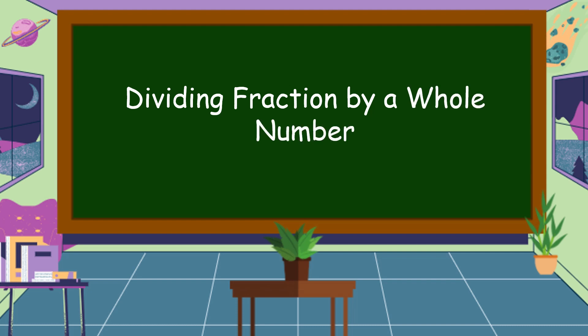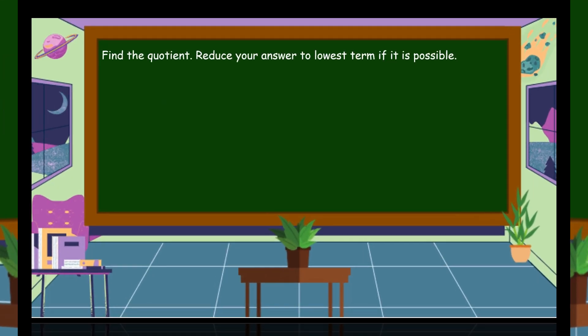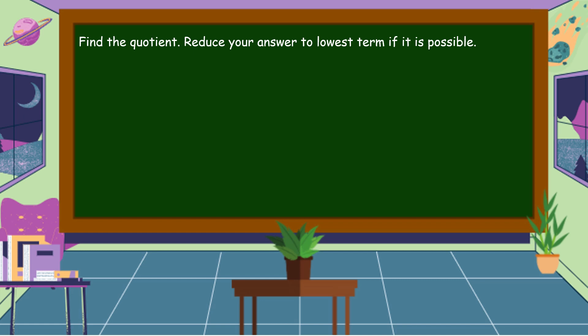Ang susunod nating pag-aralan ay dividing fraction by a whole number. Find the quotient. Reduce your answer to lowest term if it is possible. Two-sevenths divided by nine. So, dito ang ating divisor ay whole number. Ganun pa rin yung process natin — lalagyan natin ng denominator na one ang ating whole number, tapos gagamitan natin ng cross multiplication. So, two times one is equal to two. Seven times nine is equal to sixty-three.